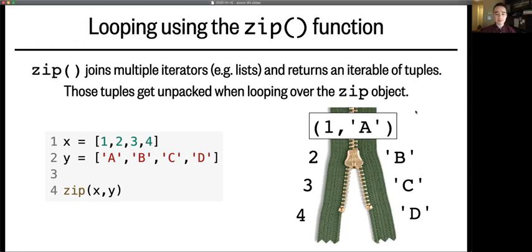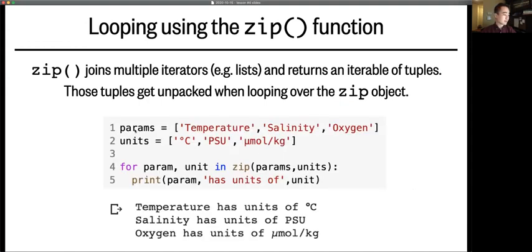Here's another example. We have two lists, params and units, and we write a for loop that iterates over those two lists, which have been zipped together.